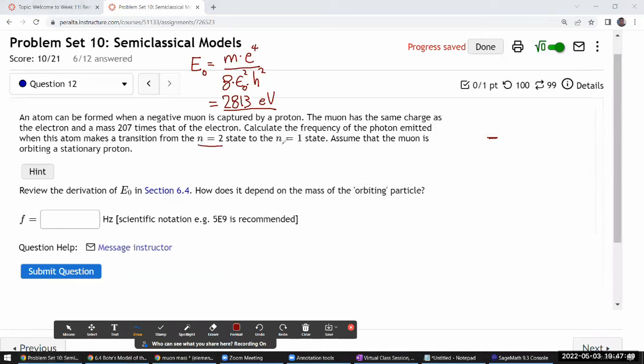So this transition from n equals 2 state to n equals 1 state, the delta E there—the change in energy as muon goes through that transition will be the energy at level 2 minus energy at level 1, or minus E₀ divided by 2 squared minus minus that E₀ number divided by 1 squared. Let me plug in the numbers and see what I get.